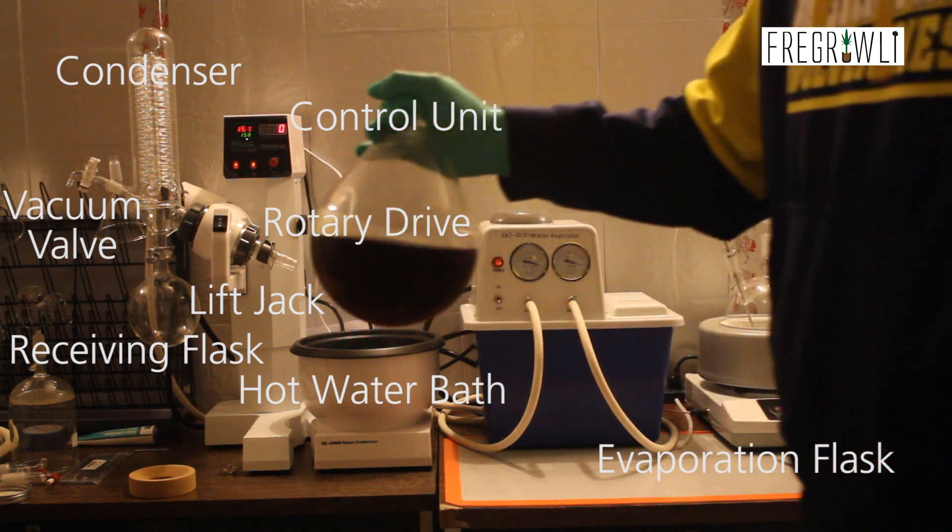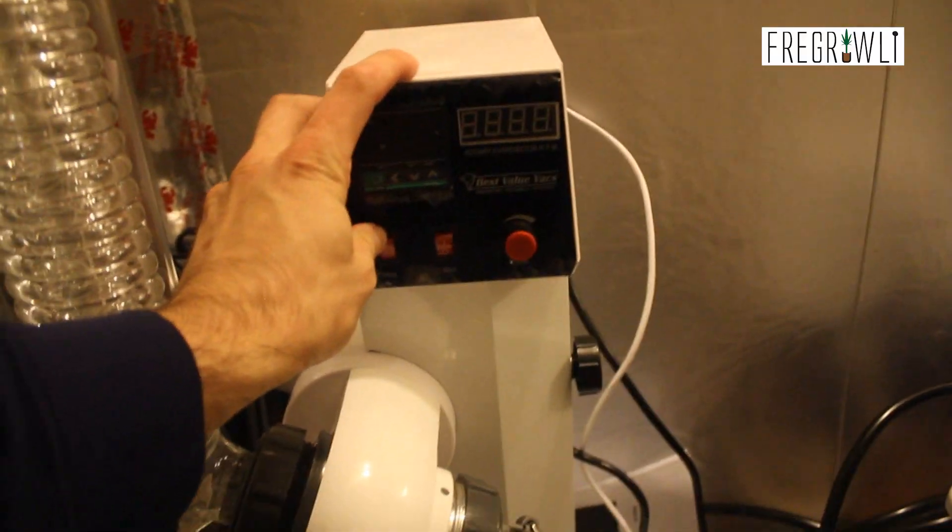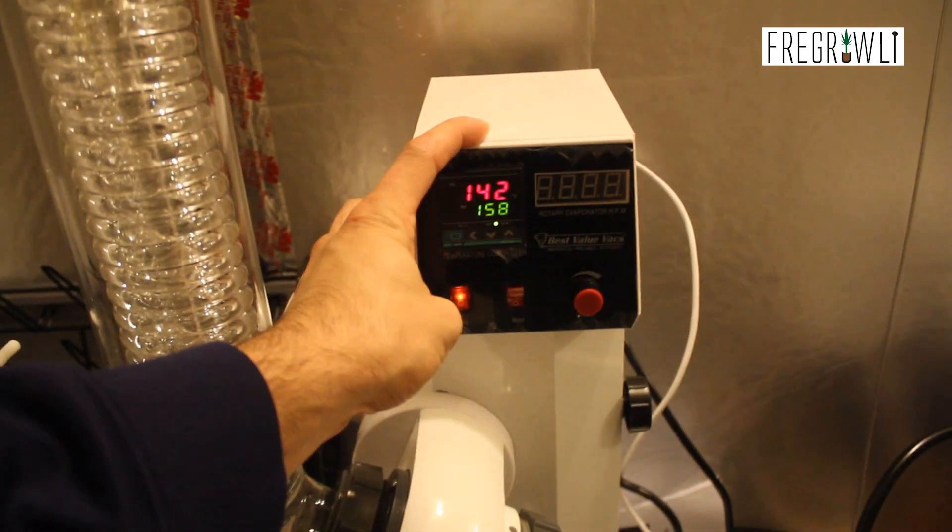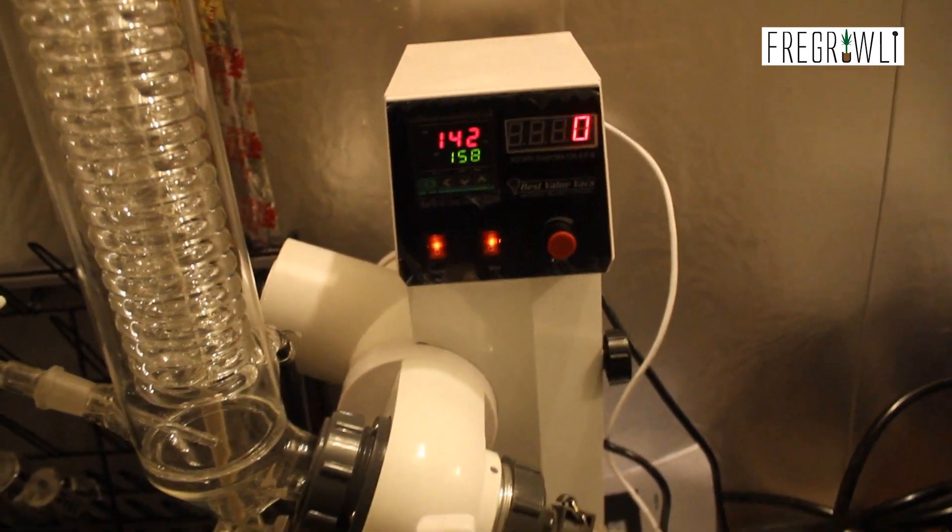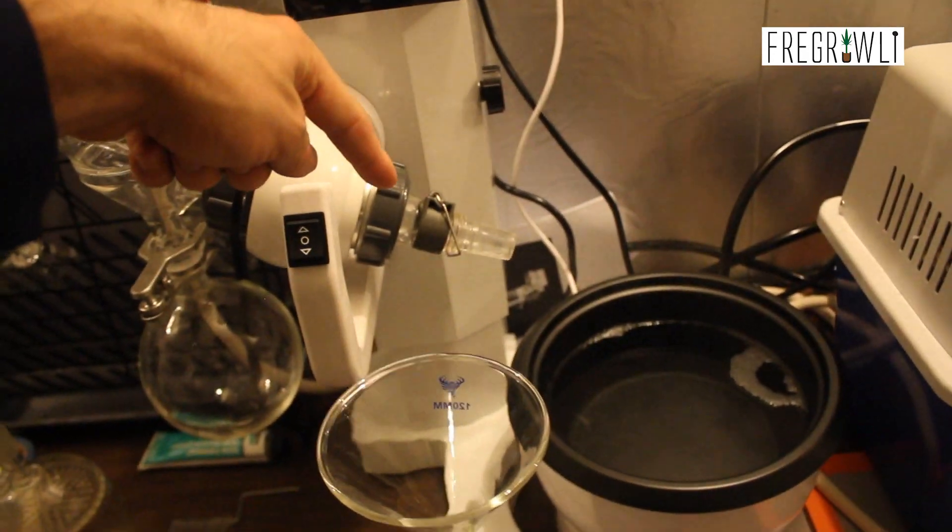The control unit allows you to adjust the temperature of the water bath and speed of rotation of the evaporation flask. Best Value Vacs recommends you set the heat bath to 113 degrees Fahrenheit or 40 degrees Celsius, and the RPM of your evaporation flask should be right around 100. The rotary drive is a system that controls the physical rotation of your evaporation flask.